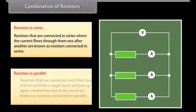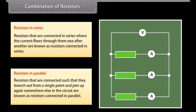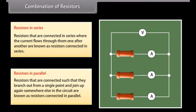Resistors connected such that they branch out from a single point and join up again somewhere else in the circuit are known as resistors in parallel. Here, the current through each component is the same as if it were the only component present, so the total current flowing through the battery is the sum of the currents flowing through each branch.